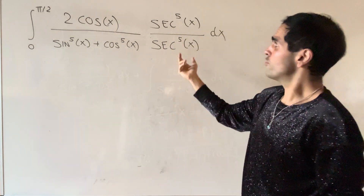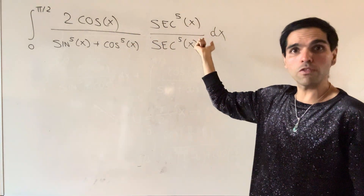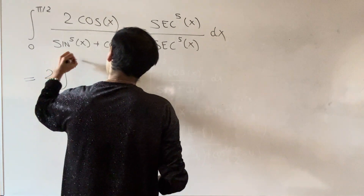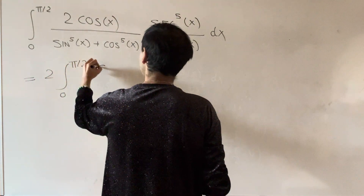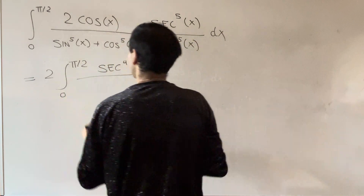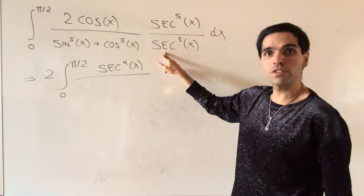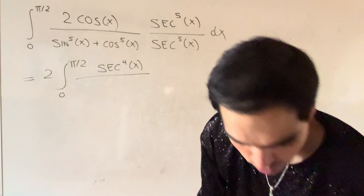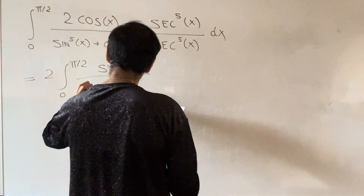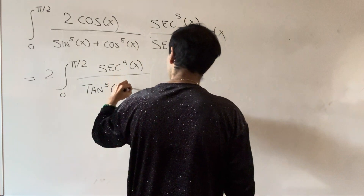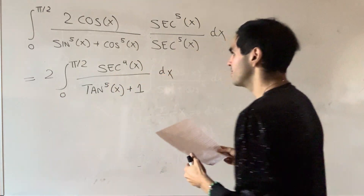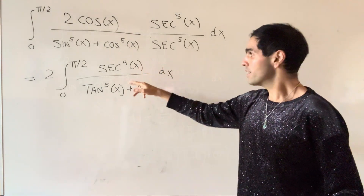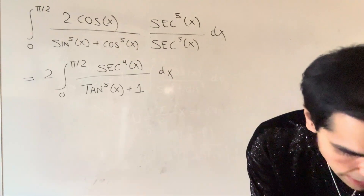The reason for this is it simplifies things: cosine is one over secant, so this becomes two times the integral from zero to pi over two of secant to the fourth of x over — now sine over cosine is tangent — so we get tangent to the fifth of x, and cosine times secant is one, giving dx.